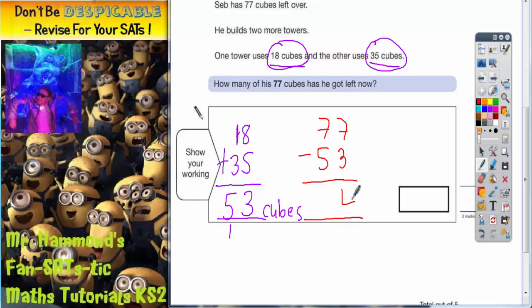So 7 subtract 3 is 4 and 7 subtract 5 is 2. So he's got 24 cubes left. So how many's you've got left? The answer in this box should be 24.